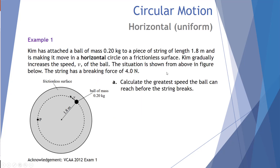Example one: Kim has attached a ball of mass 0.2 kg to a string of length 1.8 meters — effectively a radius of 1.8 meters — and is making it move in a horizontal circle on a frictionless surface. Kim gradually increases the speed v of the ball. The string has a breaking force of four newtons. Calculate the greatest speed the ball can reach before the string breaks. The string tension generates the net force mv²/r, since the surface is frictionless.